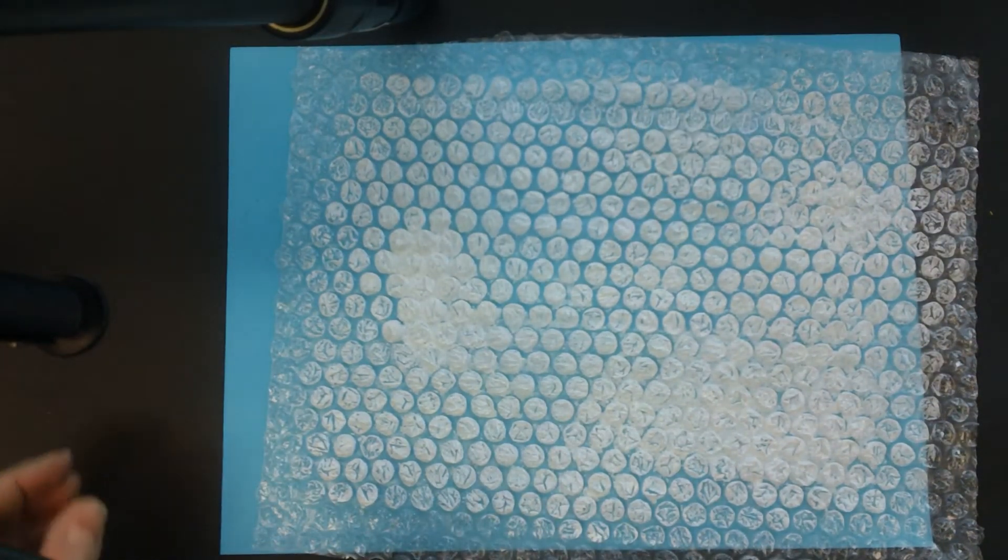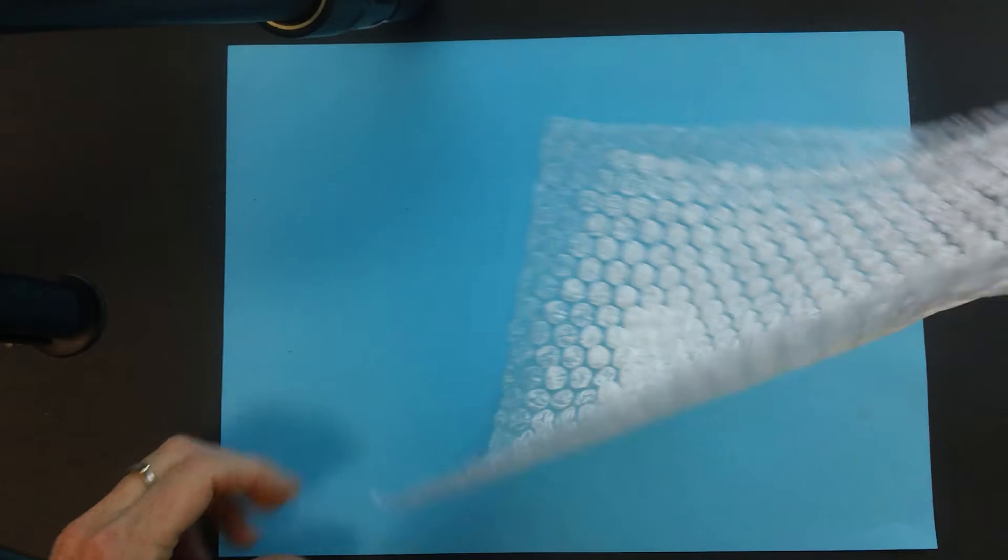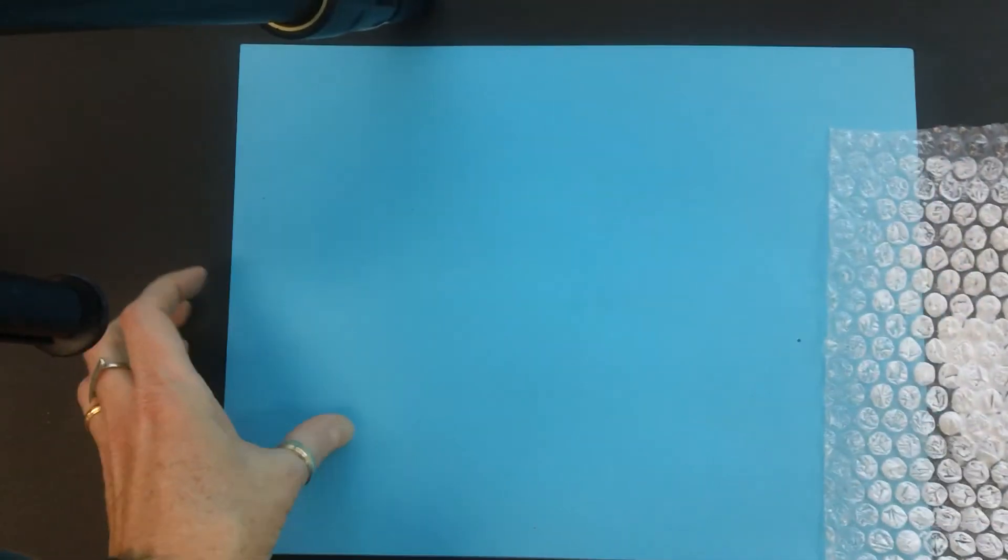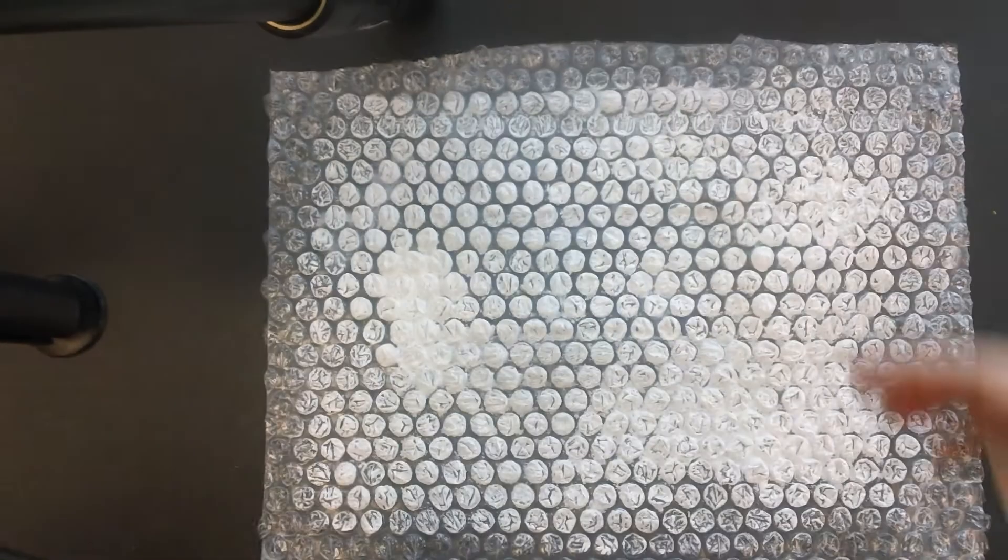I'm going to set the roller down and I'm going to take this side of the bubble wrap. I'm going to leave that. Let me get my paper out of the way. I'm going to put the bubble wrap down.